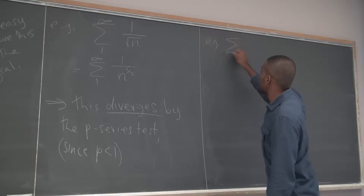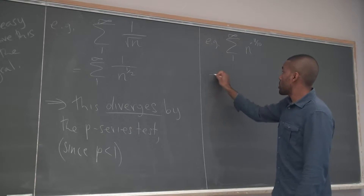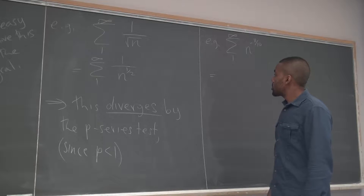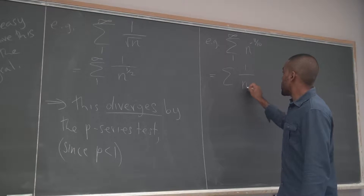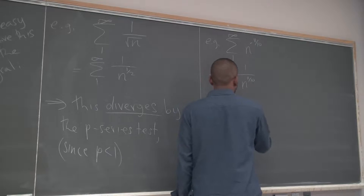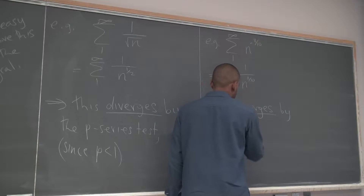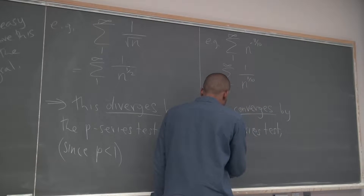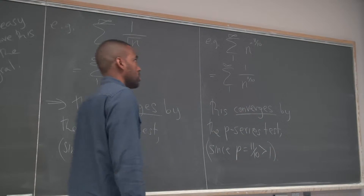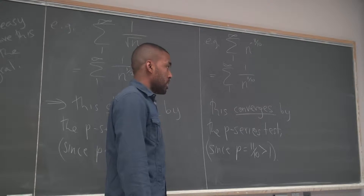As well as something like this — how could we write this to make it more recognizable? 1 over n to the 11 over 10. And your conclusion is convergence, by the P-series test, since in this case your P is 11 over 10, which is greater than 1. It would have to be n by itself to be a P-series. The situation with something like 2n plus 1 is the next kind of series.